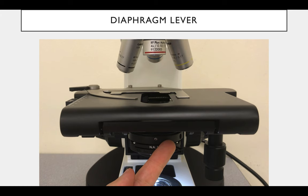Why would you want less light going in? Well, when you have less light, you can sometimes see more contrast in your specimen. So if you didn't use a dye, or if the dye isn't working that well, you can see contrast between all those little organelles or between the different objects in your specimen by dimming the light using the diaphragm lever.